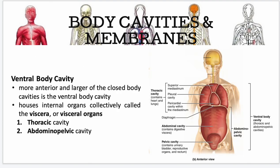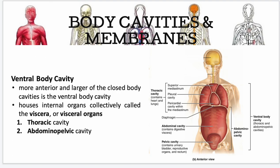Your ventral body cavity is the more anterior and larger of the closed body cavities. It houses your internal organs, collectively called the viscera or visceral organs. This includes your thoracic cavity and your abdominopelvic cavity.